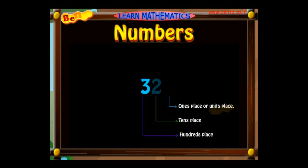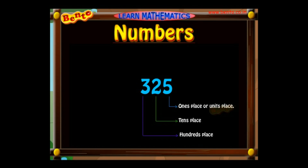The number 325 has the value 5 in its units place, 2 in its tens place, and 3 in its hundreds place. It has three hundreds, two tens, and five units in it.